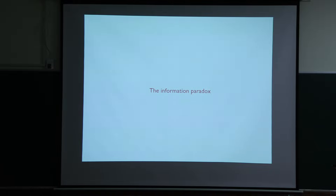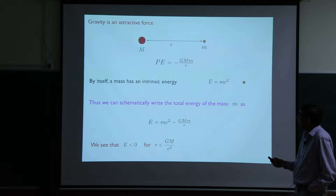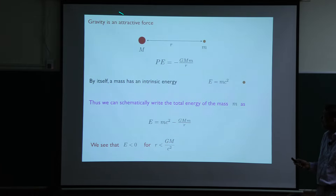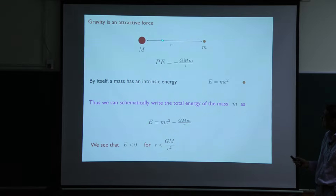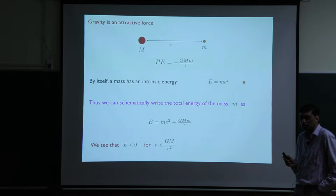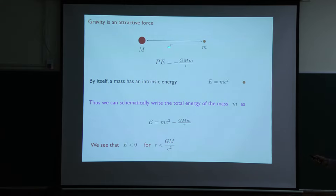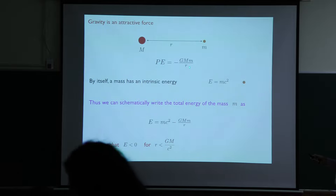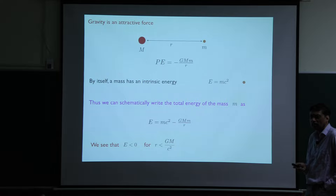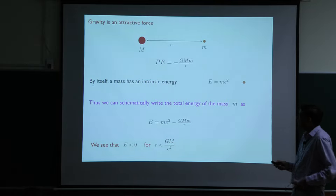Let's begin with understanding the information paradox. It's a very robust problem which can be understood in very simple ways, and it all goes back to the fact that gravity is an attractive force. Here I have a mass capital M, and here let's say I put a test mass little m at some distance r. This mass by itself has an intrinsic energy, as Einstein taught us, equal to mc squared. If I put it near this heavy mass M, there's also a potential energy — minus G times first mass times second mass upon the distance — and the minus sign reflects that gravity is attractive.